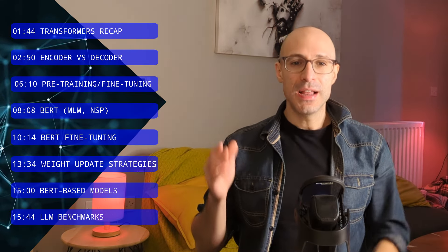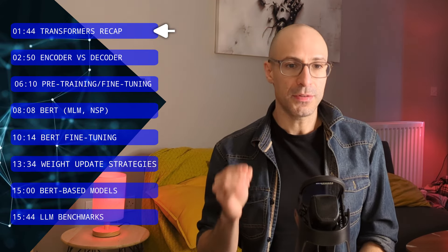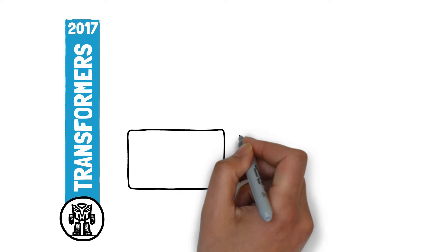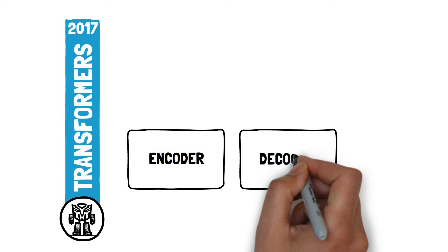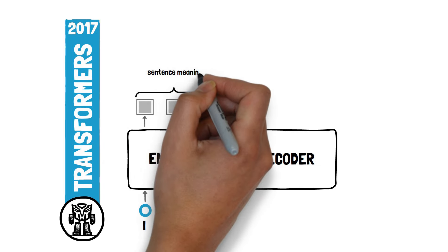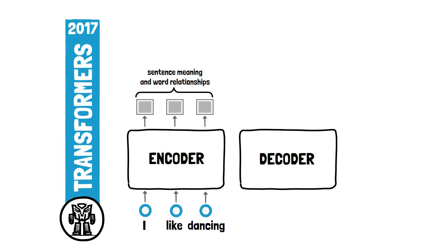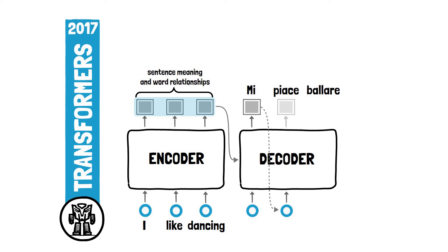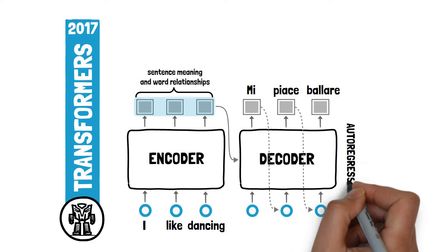Without any further ado, let's get started by recapping the key elements of the transformer architecture. In 2017 Google introduced the transformer architecture for language translation. Transformers use two components: the encoder and the decoder. The encoder processes the entire input sequence at once, generating hidden representations that capture the overall sentence meaning and how words relate to each other. The decoder can then take these representations and generate the translated sentence one word or token at a time — taking as input all the tokens it has generated so far and producing the next token. We call this an auto-regressive model.